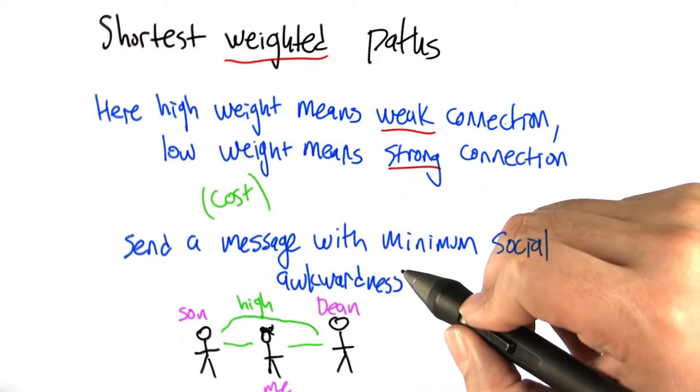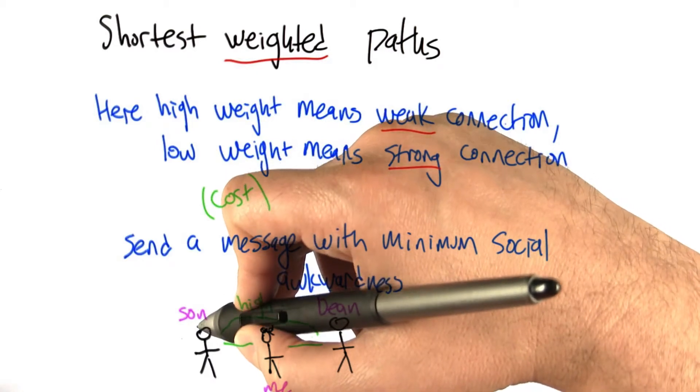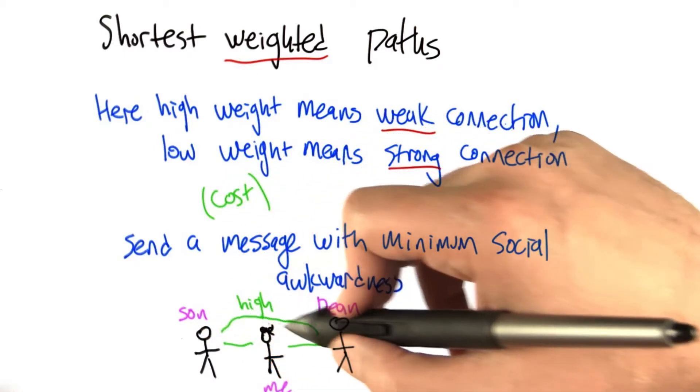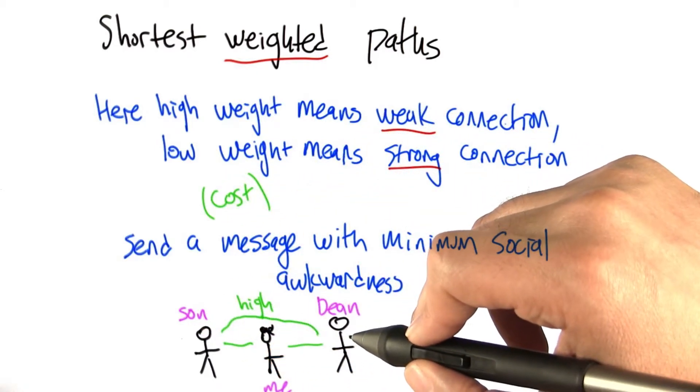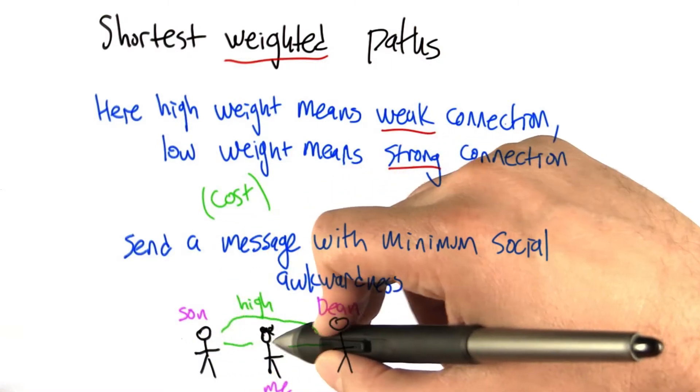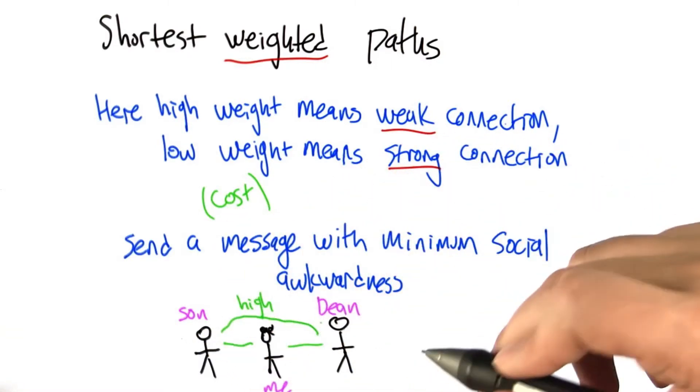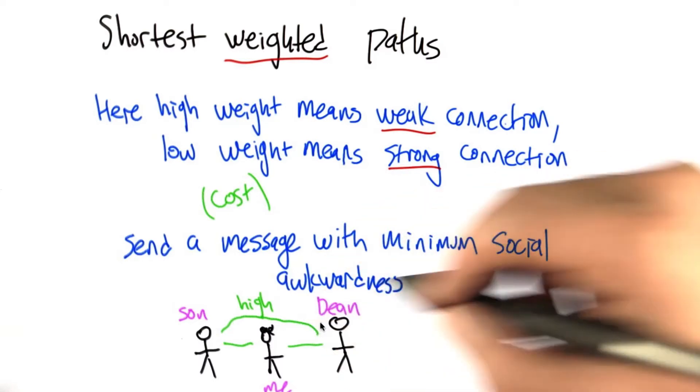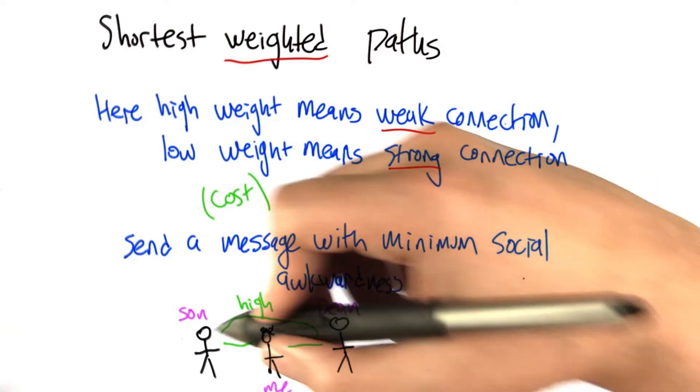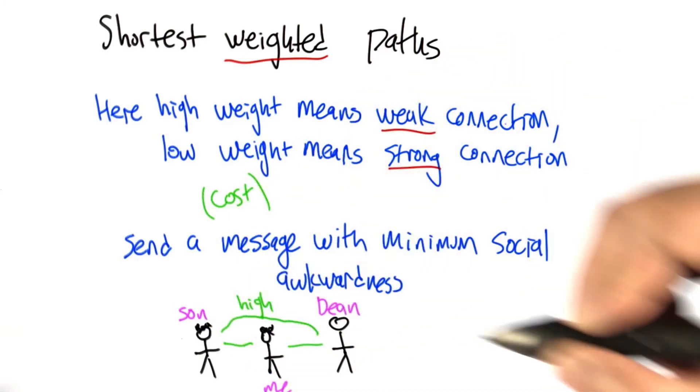but I was able to help get a message from my son to the dean because I have very low social awkwardness with my son, and I have fairly low social awkwardness with the dean. So the path of sending a message, basically a recommendation for a book to read about American history, traveled much more easily through me to the dean than it would have to the dean directly. Oh, and I should note that my son also has curly hair.